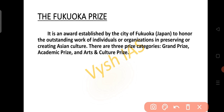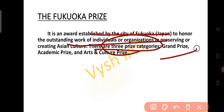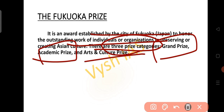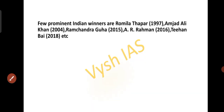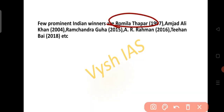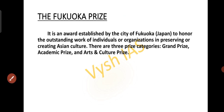The Fukuoka Prize is an award established by the city of Fukuoka in Japan to honor the outstanding work of individuals or organizations in preserving or creating Asian culture. There are three prize categories: Grand Prize, Academic Prize, and Art and Culture Prize. A few prominent Indians who won this prize are Romila Thapar, Amjad Ali Khan, Ramachandra Guha and A.R. Rahman. With this, we have come to the end of the chapter on awards and honors.